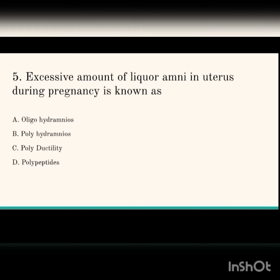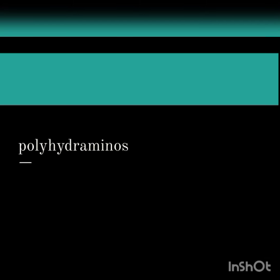Next question: excessive amount of liquor amnii in the uterus during pregnancy is known as what? The options are oligohydramnios, polyhydramnios, polydactyly, and polypeptides. The answer is polyhydramnios. The opposite, oligohydramnios, means there is a decreased amount of liquor amnii.